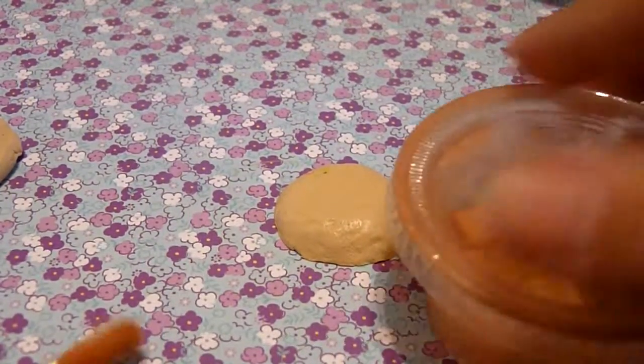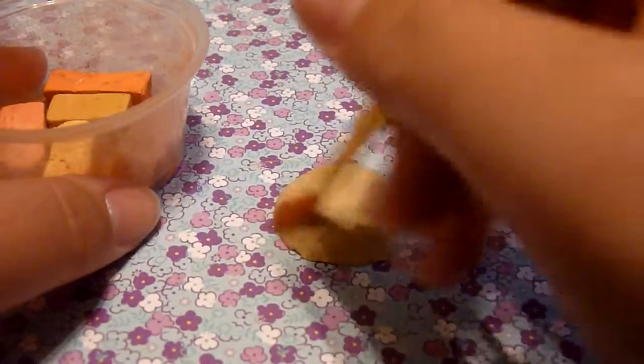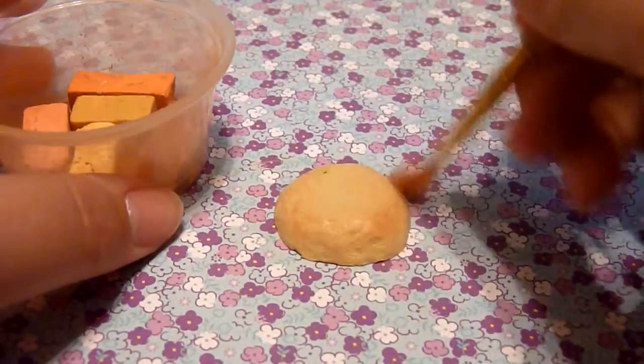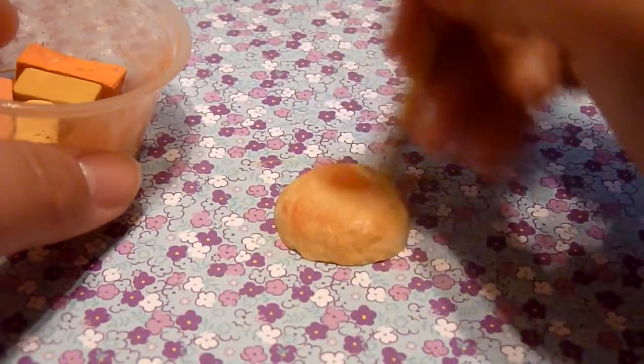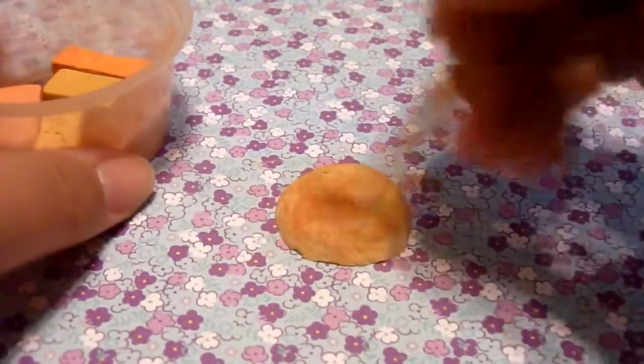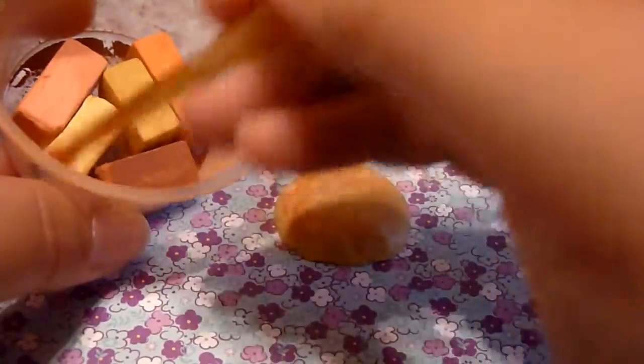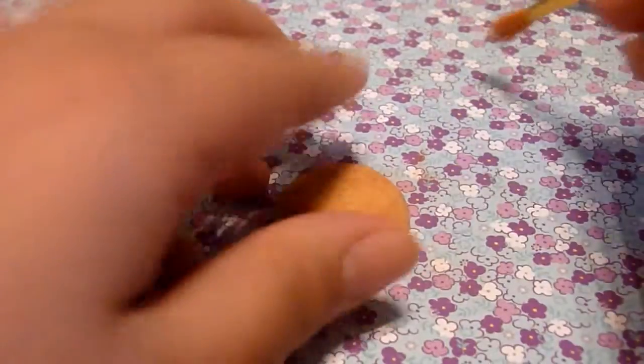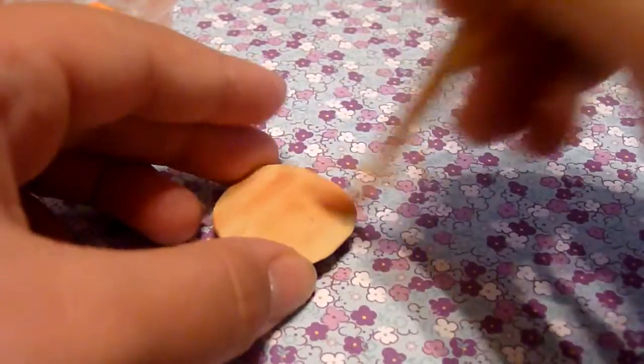And then you're going to take your chalk pastels and your soft paintbrush and shade it around the edges. That's kind of dark, but it's okay. And you can do the back too if you want. And you can also texture the back, but I didn't want to do that.